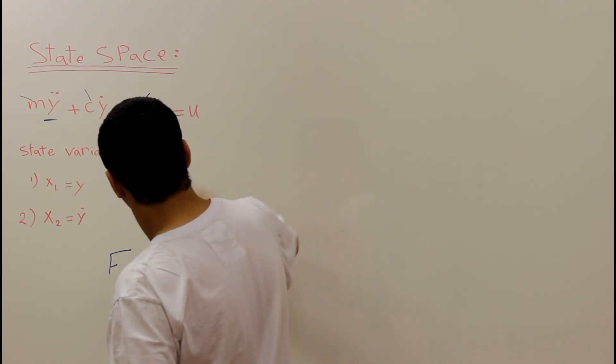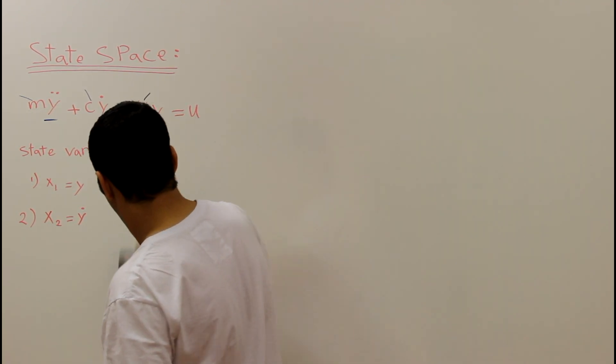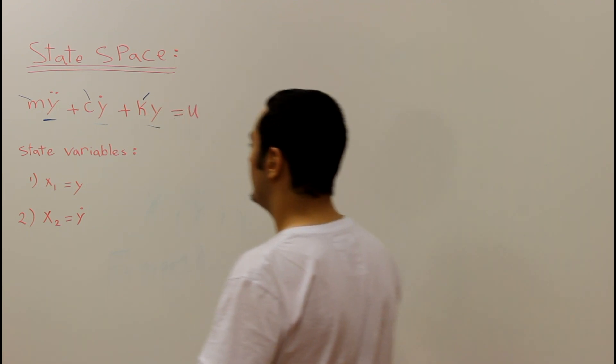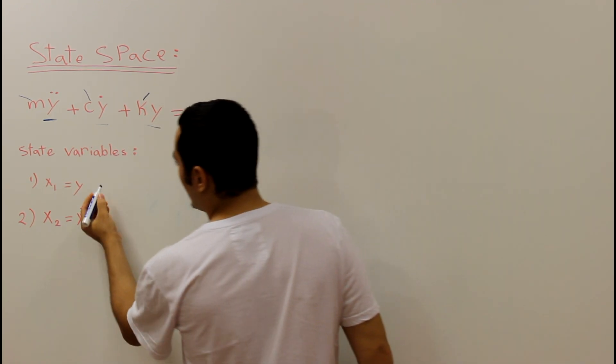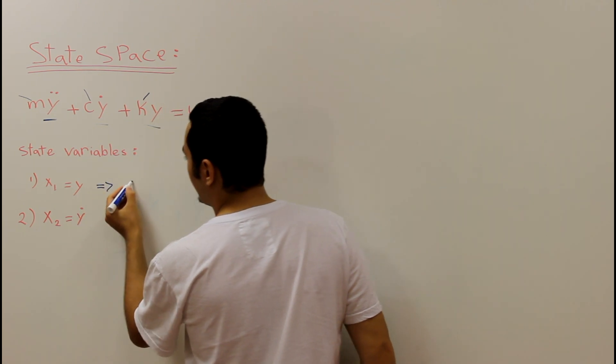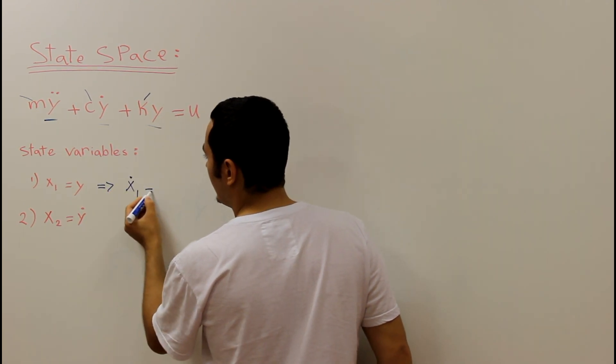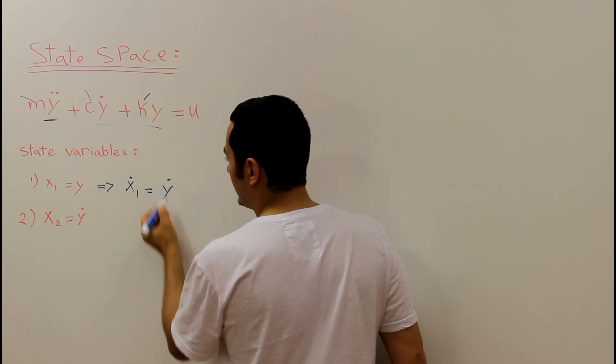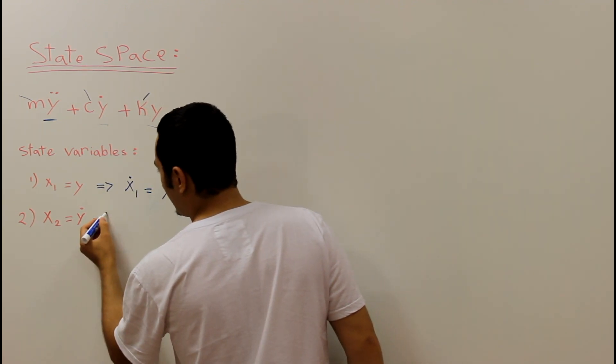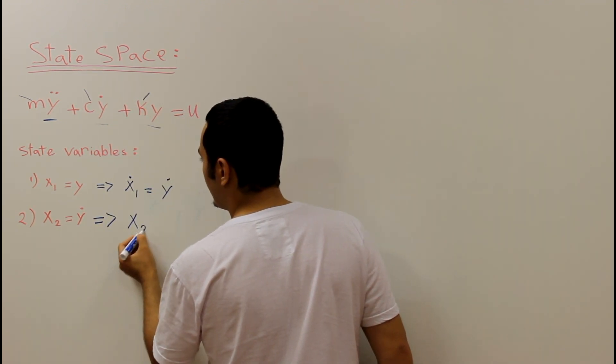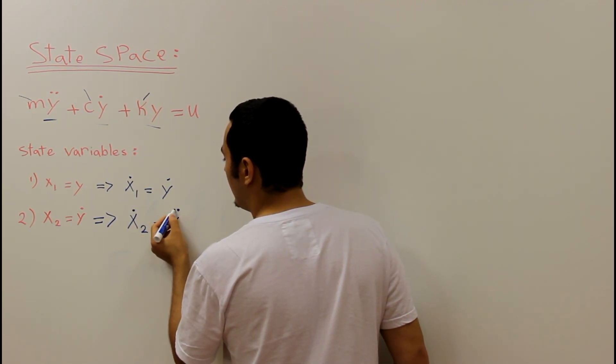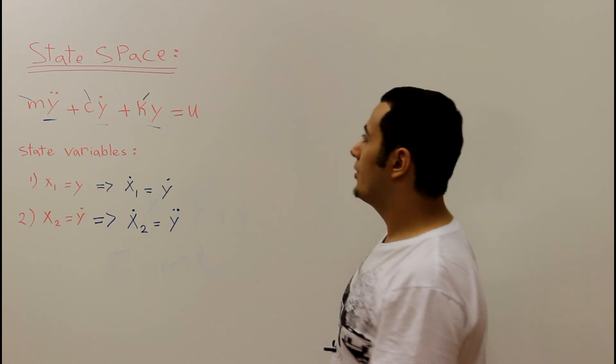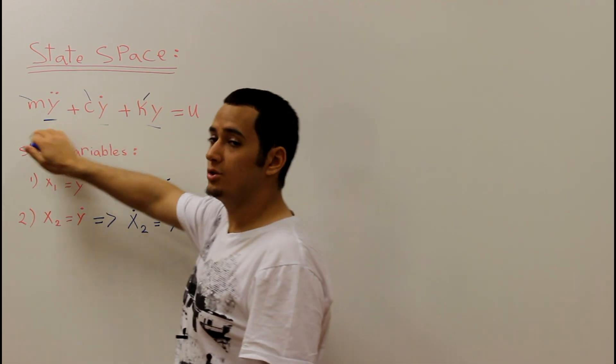And right now, we are going to solve this problem. But before we solve this problem, we are trying to generate more equations. So from this equation, we can say that x1 dot equal to y dot. From this equation, we can say x2 dot equal to y double dot.